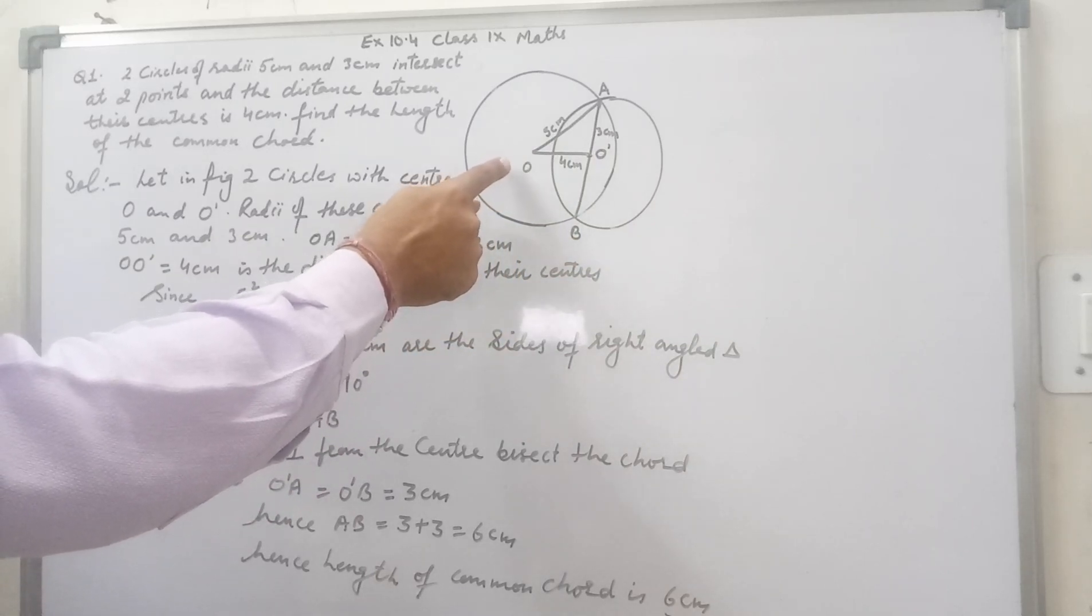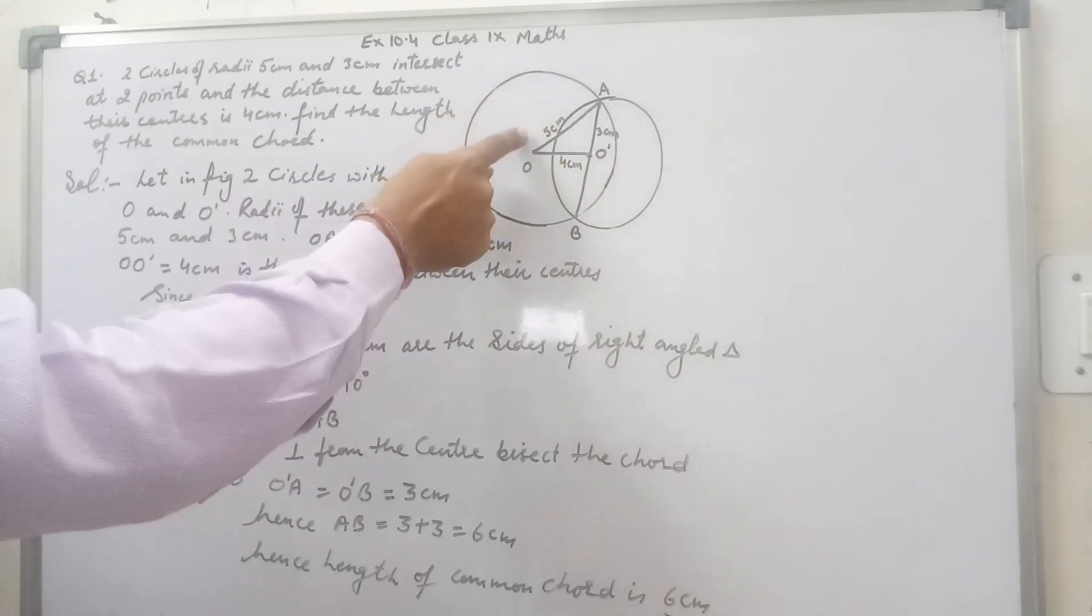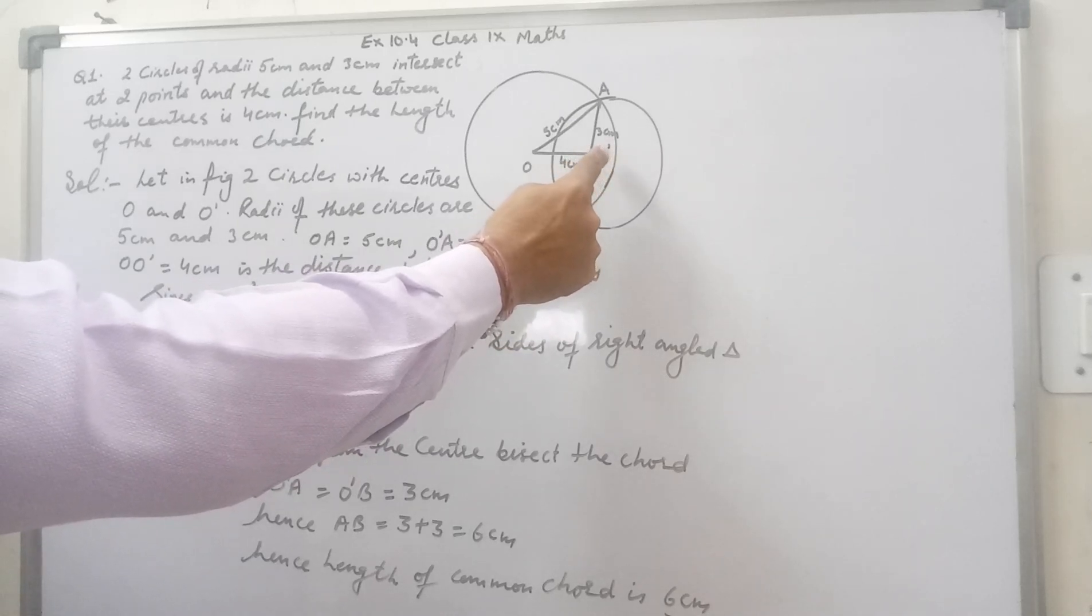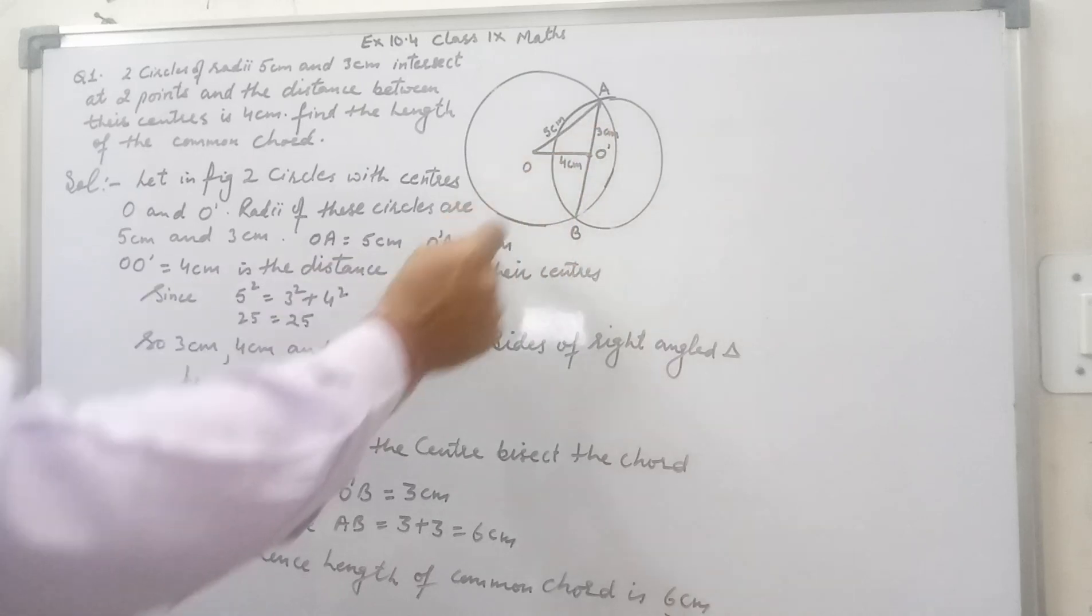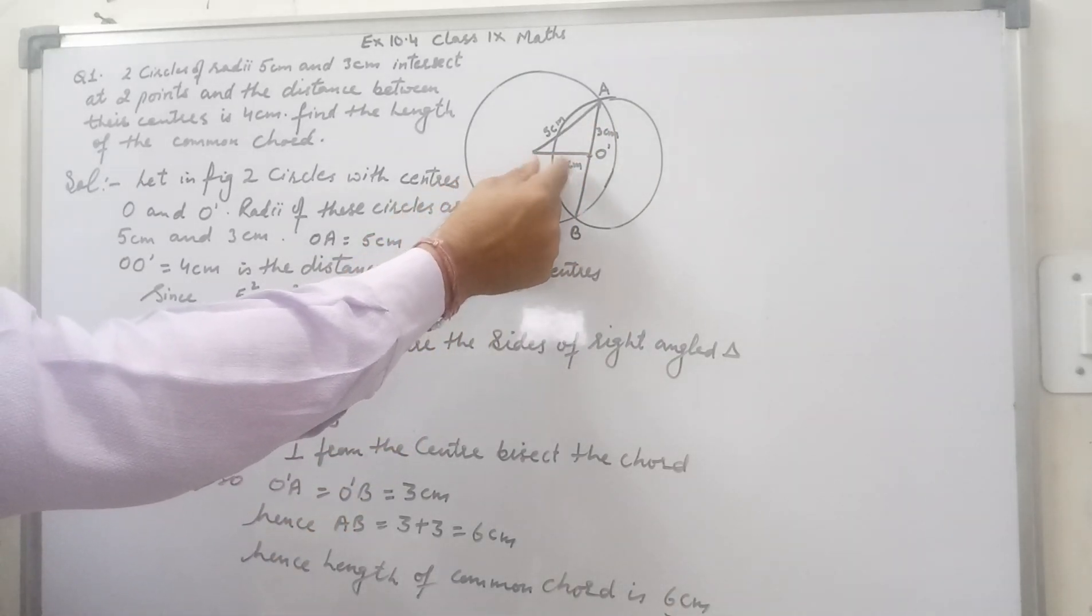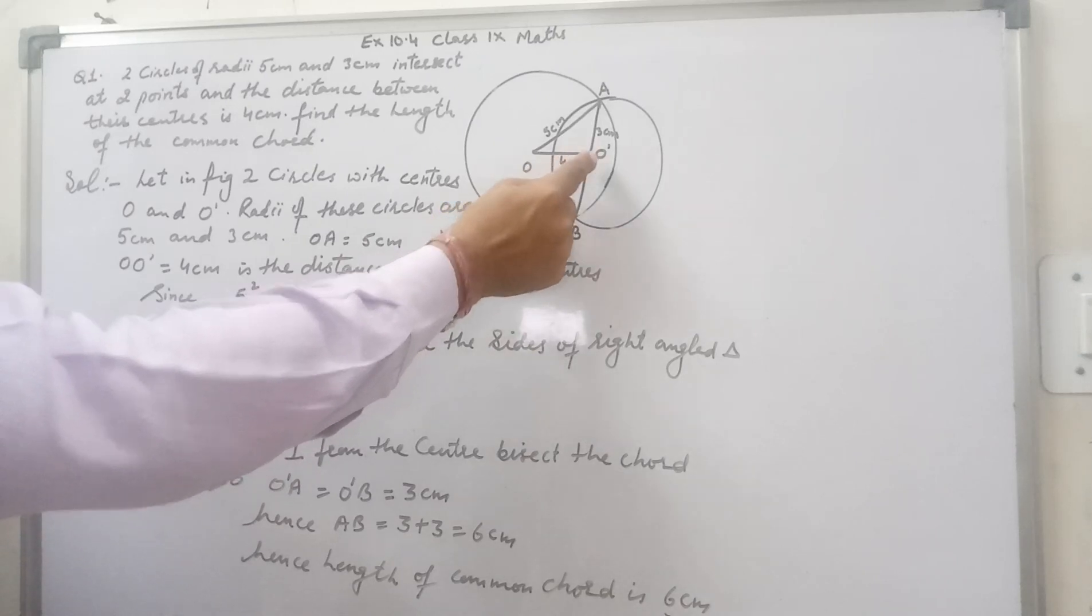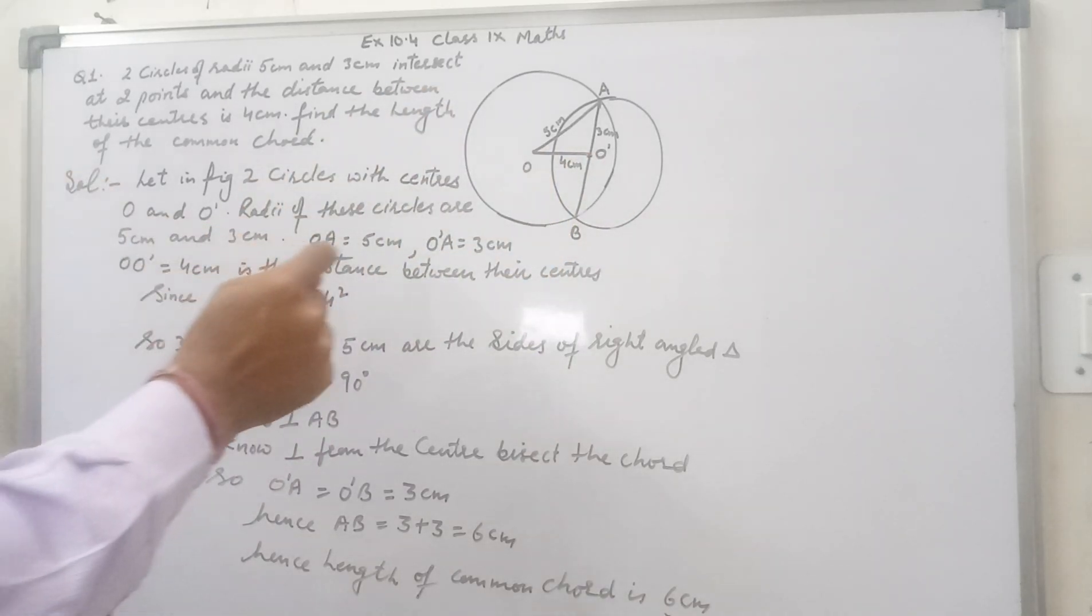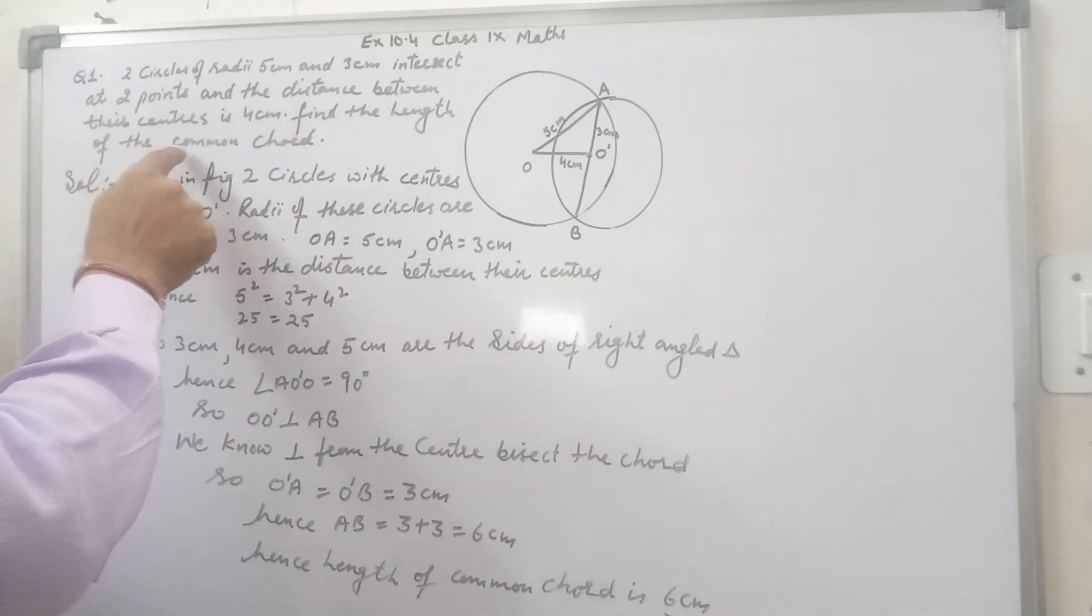Radius of first circle is OA that is 5 cm and the radius of second circle is O dash A that is 3 cm. Now, you see here the distance between their centers O O dash is 4 cm.